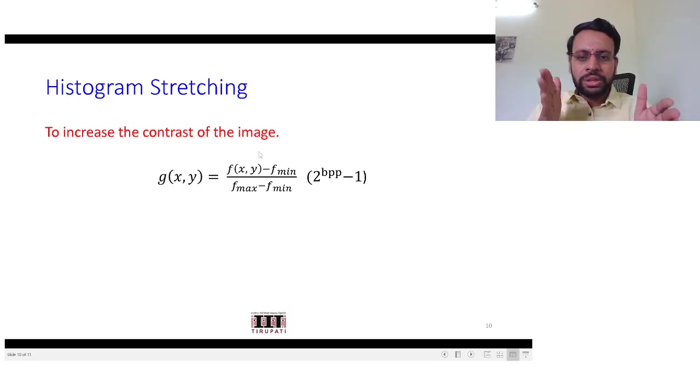So when it is 0, this constant is going to be 0, that means g(x,y), the transformed image, will be 0. When this is 1, which would be the case when f(x,y) equals f_max, that would now get mapped to 255. And the intensities that are there in between f_min and f_max will be proportionately moved.